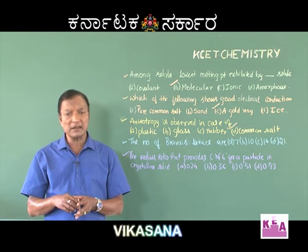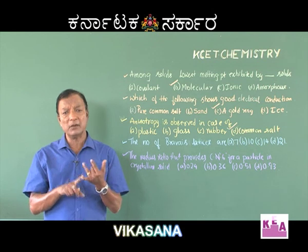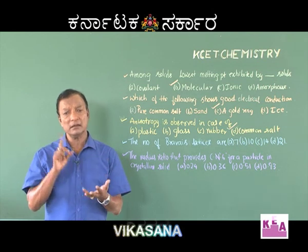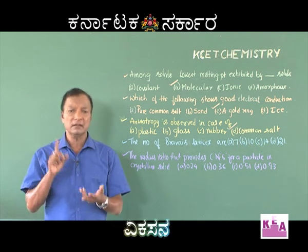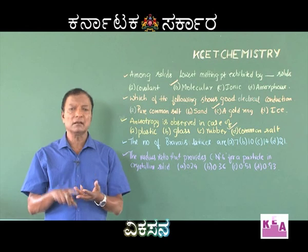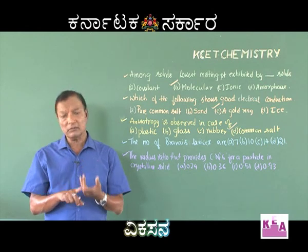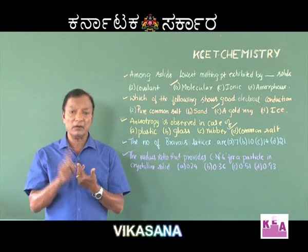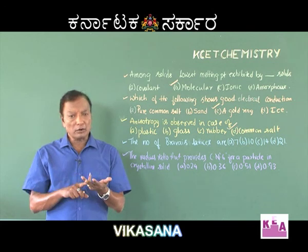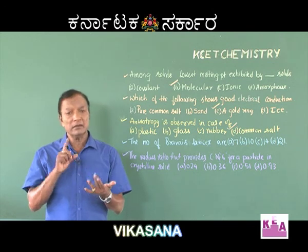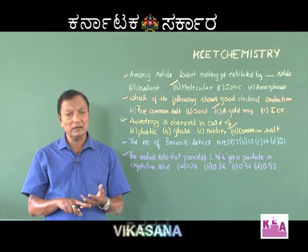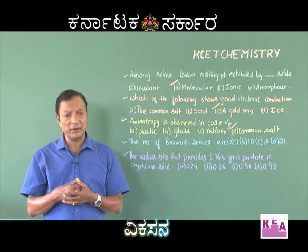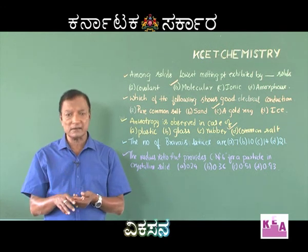There are seven basic unit cells we observe. These seven basic unit cells are: number one, monoclinic; number two, triclinic; number three, tetragonal; number four, hexagonal; number five, orthorhombic; number six, rhombohedral; and number seven, cubic — seven unit cells.